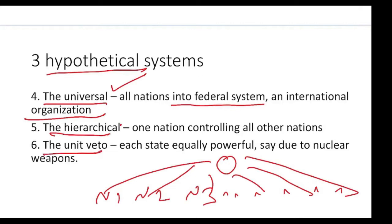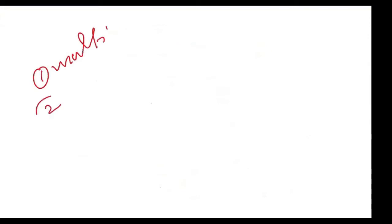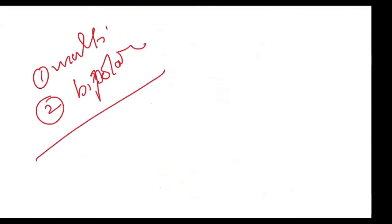And the unit veto system, in which each state is equally powerful — say due to nuclear weapons — so equal power. The world hasn't seen this either. So essentially, the useful or empirically valid systems that he proposed are only two: multipolar and bipolar.